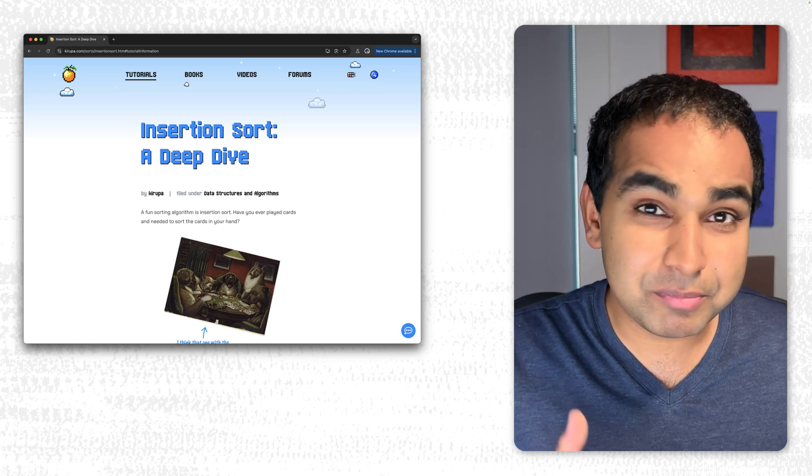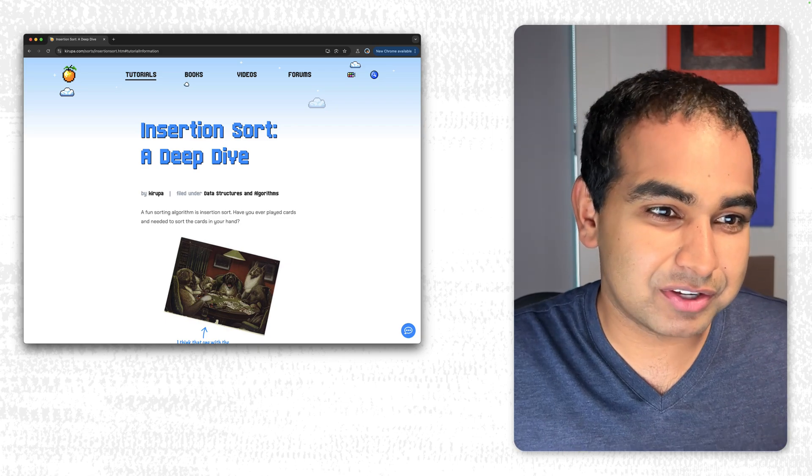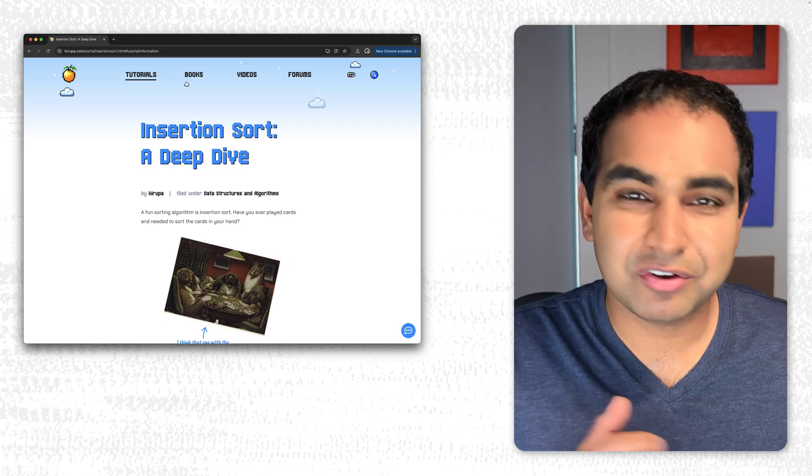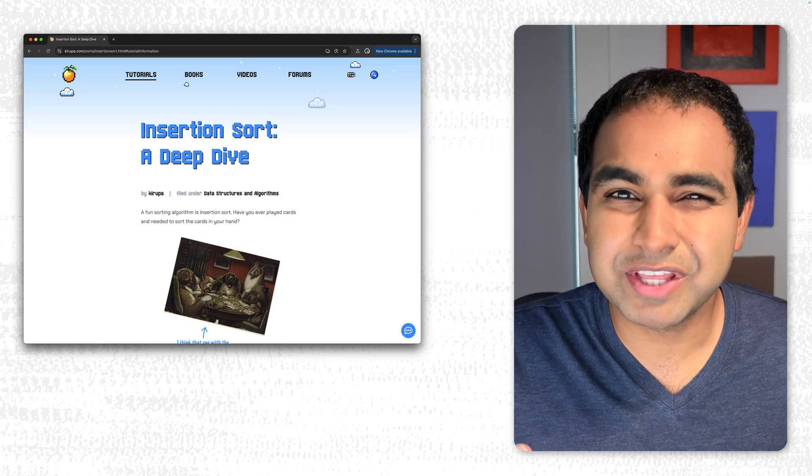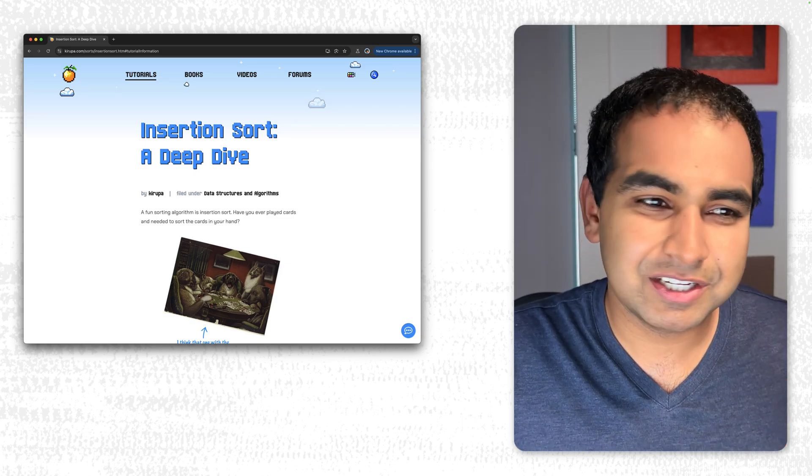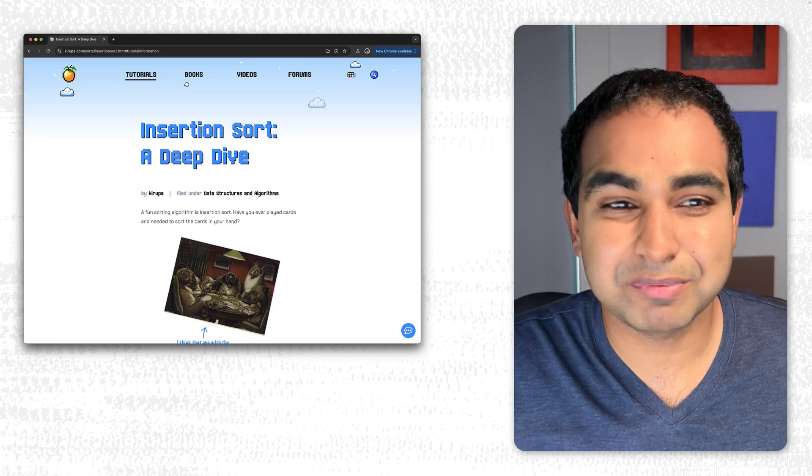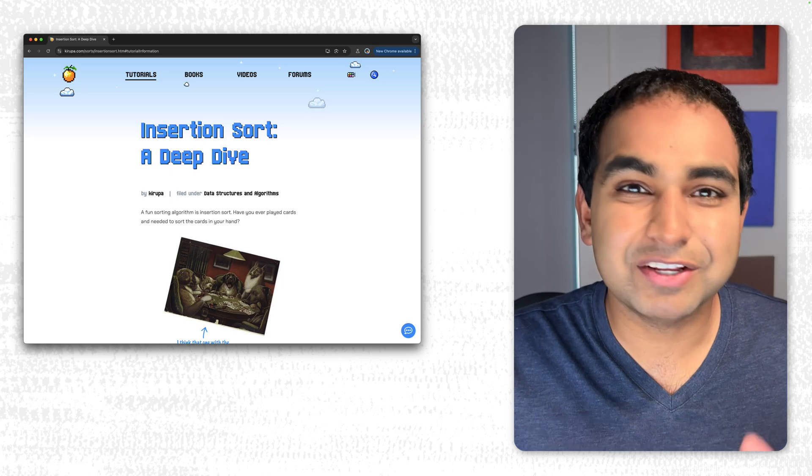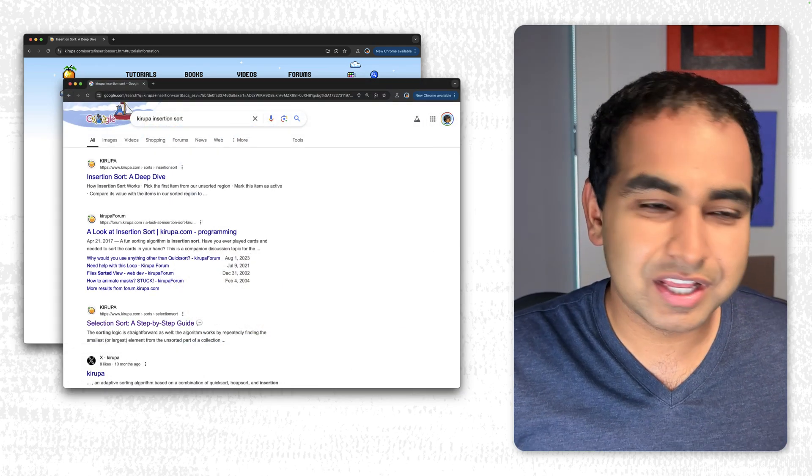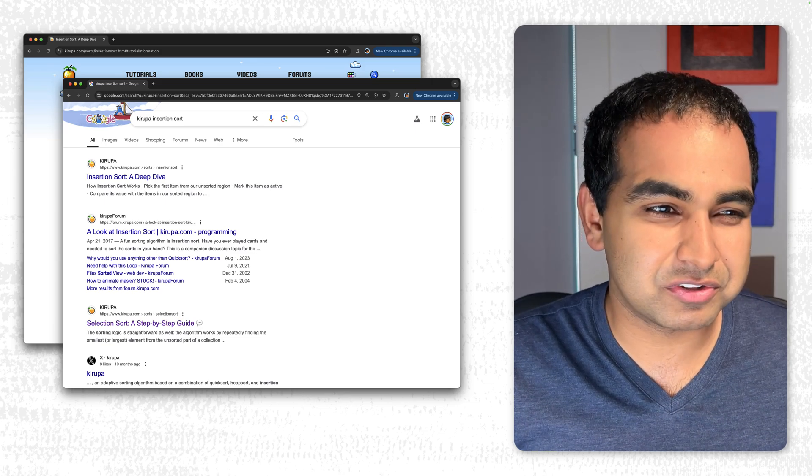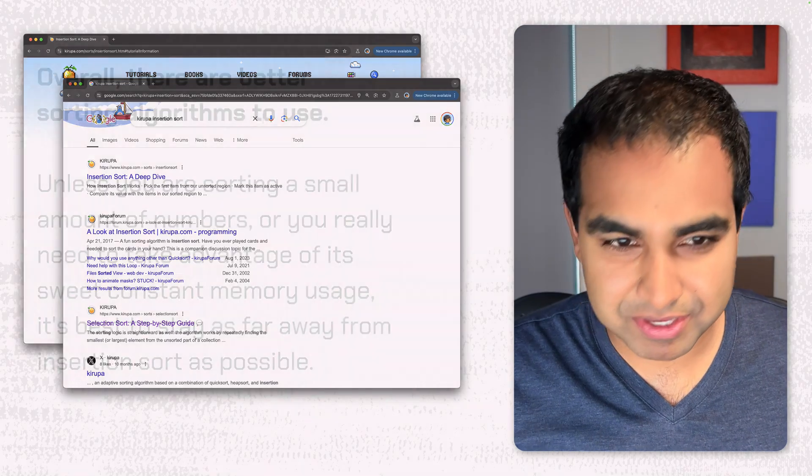To learn about how to actually use this algorithm and create it and write it, my article insertion sort on kirupa.com goes into more detail because showing JavaScript is not very convenient in video form. So go here, check out the article, scroll down a bit, you'll see the JavaScript implementation of how this works in great detail. The easiest way to find it is to just go to Google, type in Kirupa, search for insertion sort after that, separate the keywords, and you will see my results coming at the very beginning.